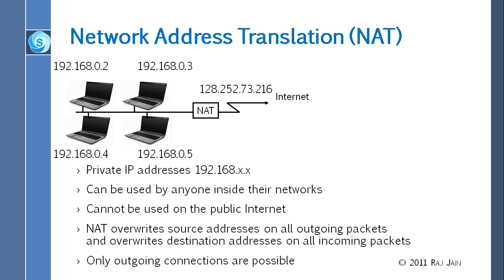If you send a packet on the internet with a source or destination address starting with 192.168, it will be thrown away — it's a private address. It can only be used within a private network, your own home. Inside the home, you can have lots of computers with those addresses and they can talk to each other. But when you want to go outside, you have to use a public address.